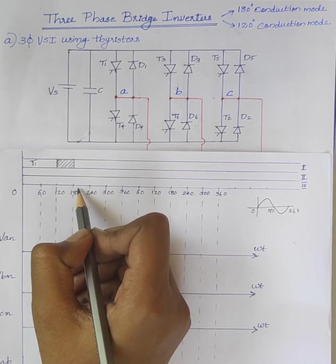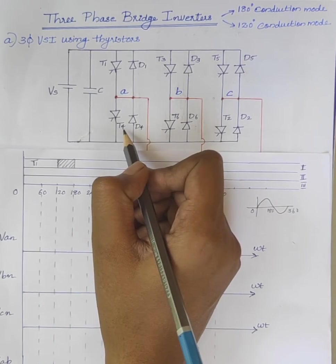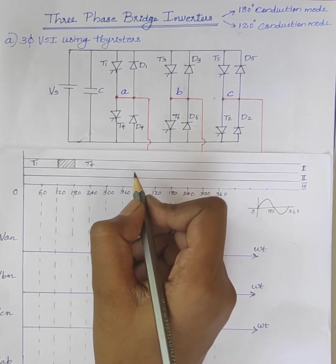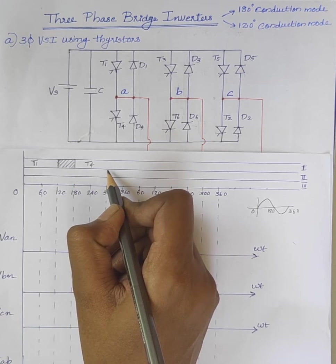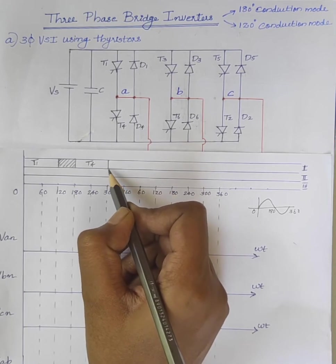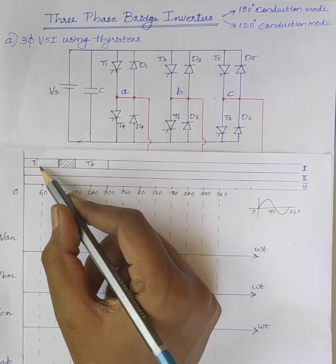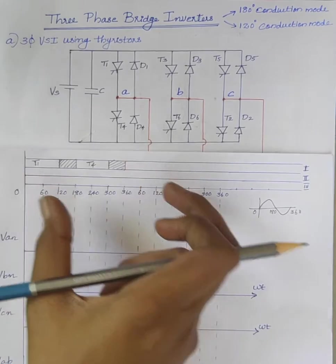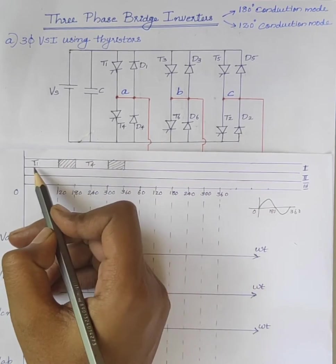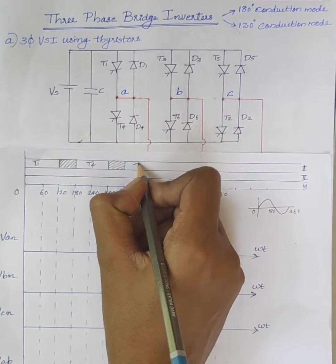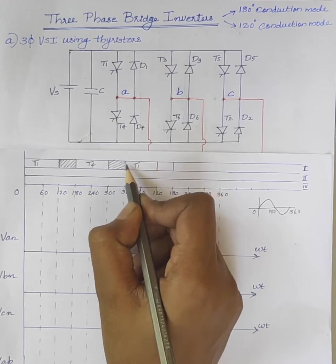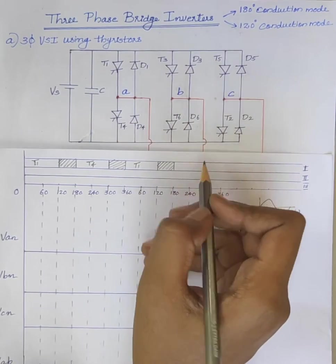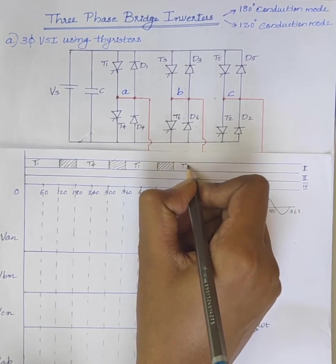After that, at omega T equal to 180 degrees, we are giving firing pulses to T4. T4 conducts for 120 degrees, that is from 180 to 300 degrees. After that, from 300 to 360 degrees, neither T1 nor T4 conducts. So this completes the first cycle. During the next cycle, firing pulses are given to T1 again. T1 conducts for 120 degrees and the remaining 60 degrees both thyristors T1 and T4 are open. Then T4 again, and so on.